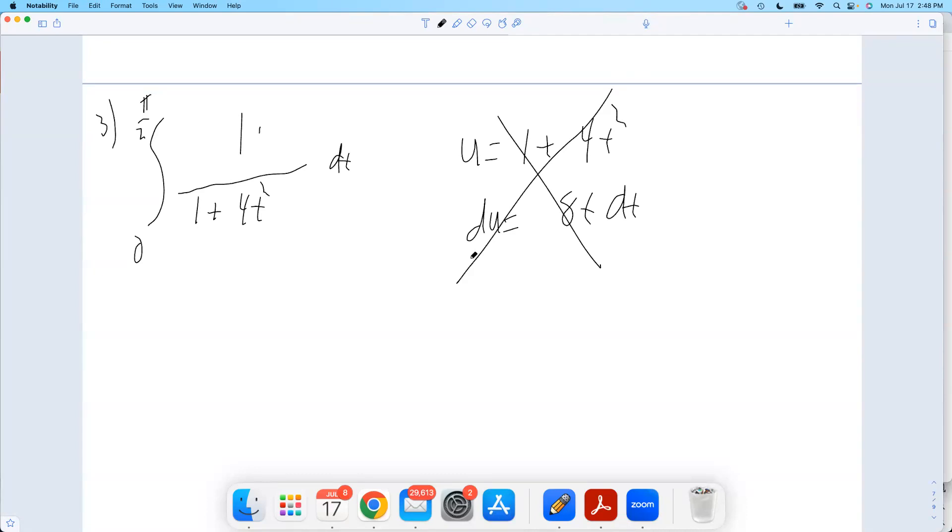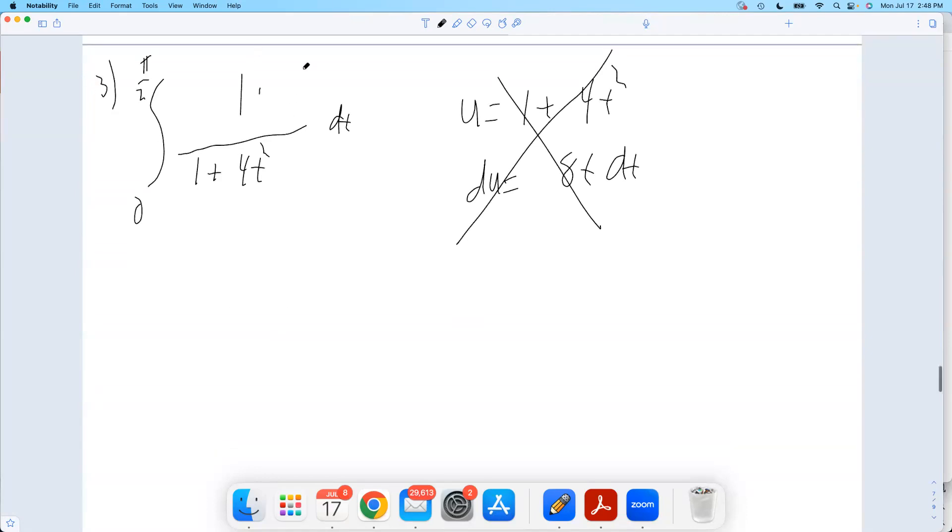We're going to try something different. We want to think here, wait a minute, what antiderivatives do I know that kind of look like this? I know that the antiderivative of 1 over x squared dx is the arctangent or inverse tangent of x plus c. So that kind of has the right form, only I've got that extra 4 there. Well, maybe if I could just make this like an x squared. I want to kind of think 4t squared is playing the role of x squared.